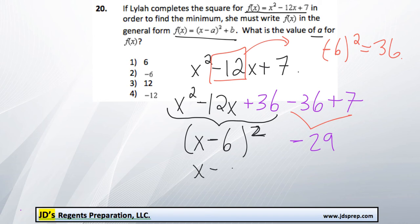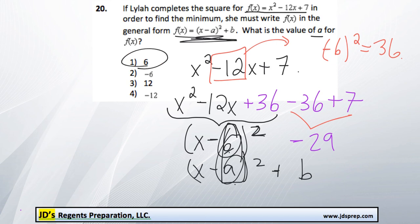Now that we have it written in the form of x minus a squared plus b, we can see that the a term is 6. Be careful not to think that it's negative 6 because it's been subtracted, because in the format, the general form is x minus a, so the 6 is actually positive. The correct answer is option number 1. Thanks for visiting JD's Regents Preparation.